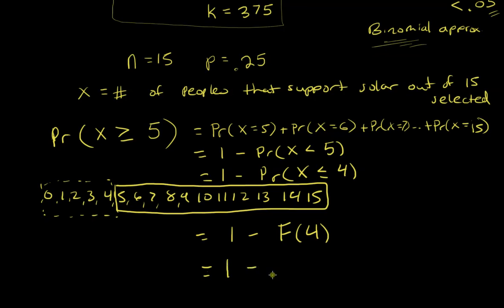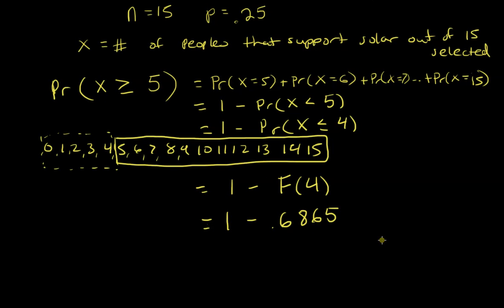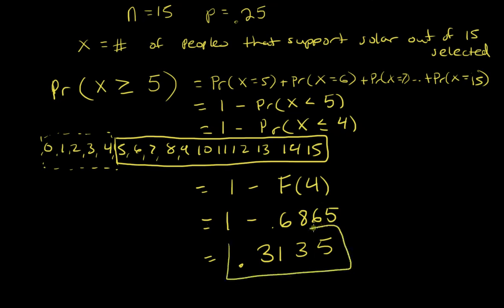So 1 − 0.6865 = 0.3135. The probability that at least five out of the 15 randomly selected residents support the solar power plant is 0.3135.